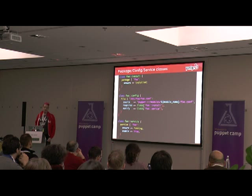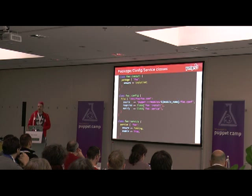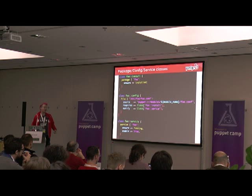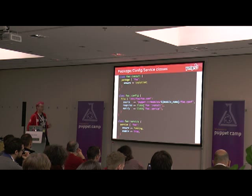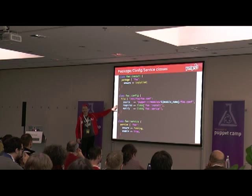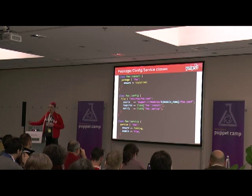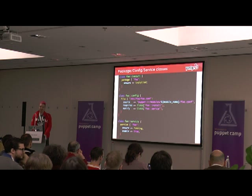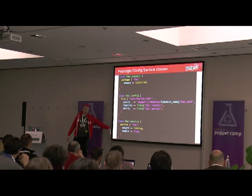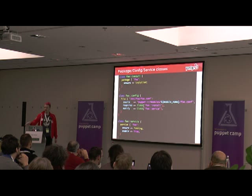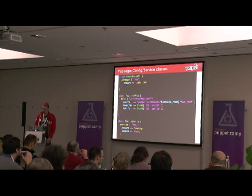I like a different pattern better — I split everything up into individual classes. There will be an install class, and in a simple case that just contains the package. There will be a config class that just has the one config file. There will be a service class that just contains a service. The nice thing about this is you can put the metaparameters on the entire class. So if you add extra config files later, you get nice stuff happening — your extra package or extra services will automatically get notified. If you add a second service, it will also get notified if the config changes. Pulling the abstraction up from notifying on a specific file or service to notifying on an entire class is actually really nice and a lot more flexible.